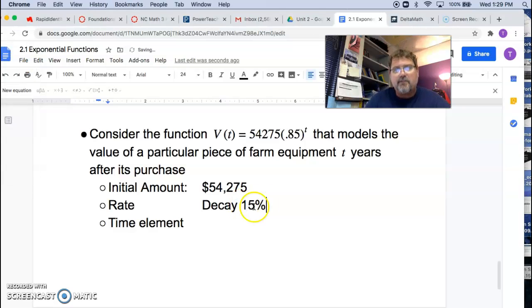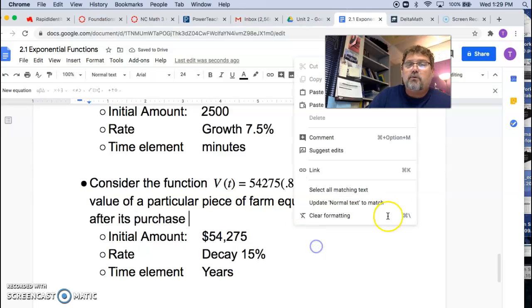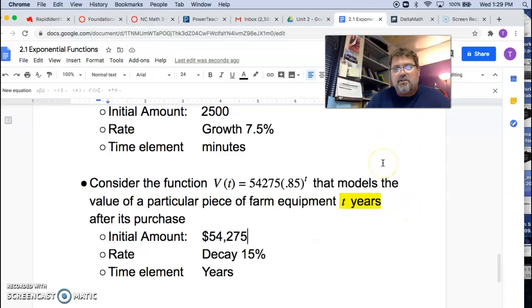It's decaying at a rate of 15%. Now the question is, how often? And there's the answer right there. It's in years. So it's 15% per year. And this is just us analyzing these and they're sort of the bare bones, what the functions got to offer without doing a lot of complicated calculations. You can kind of see some of it right out of the gate.